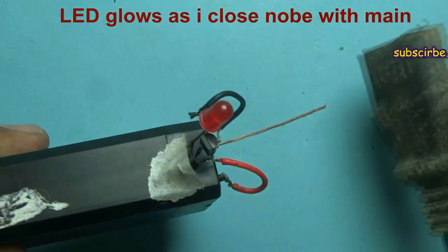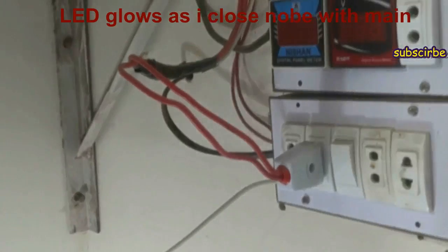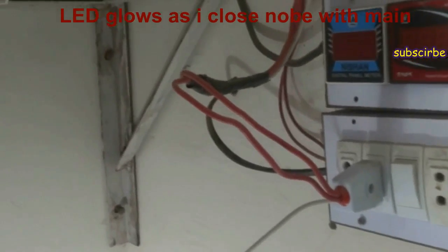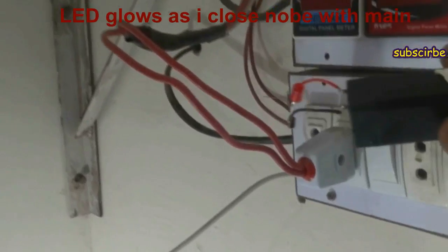As the knob comes close to the main wire, the LED glows. It means that electricity is available in the wire.